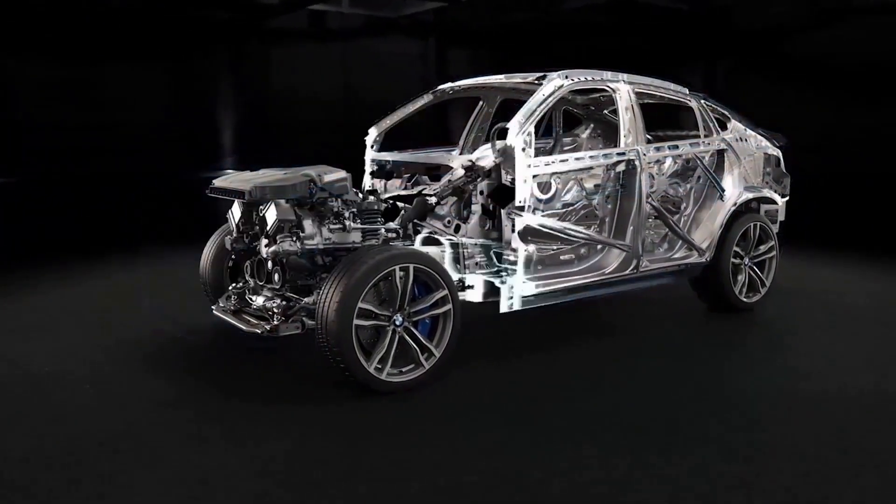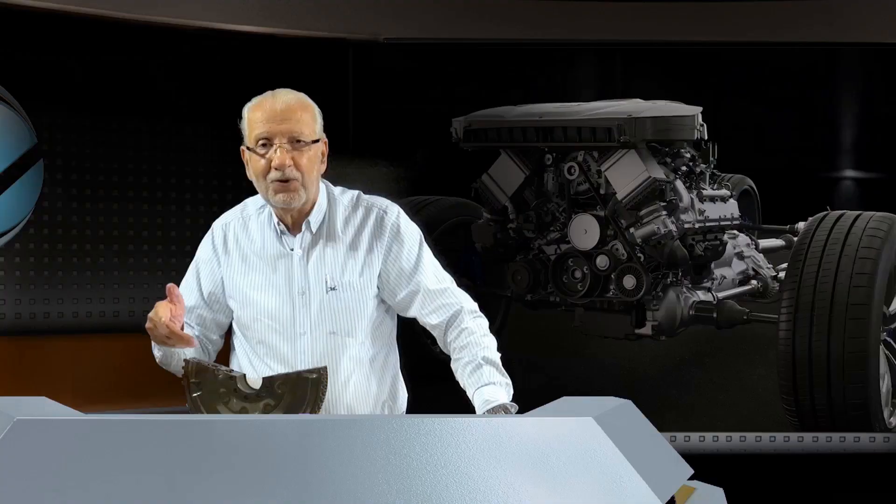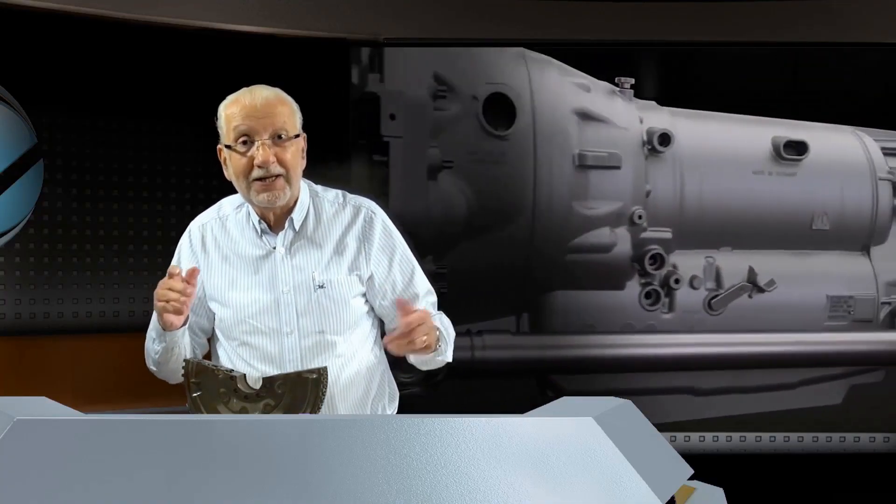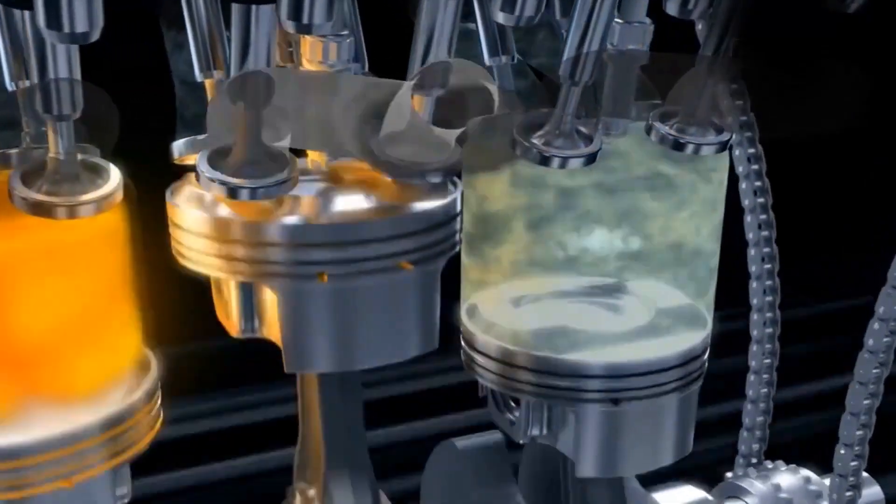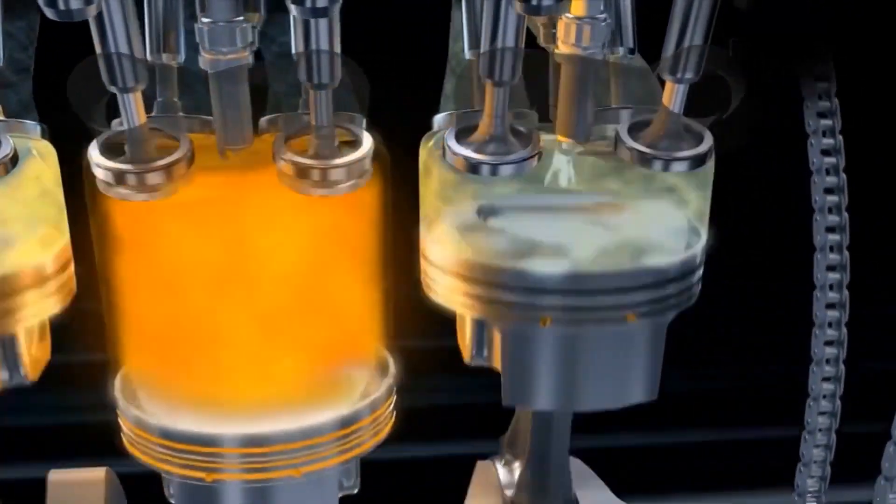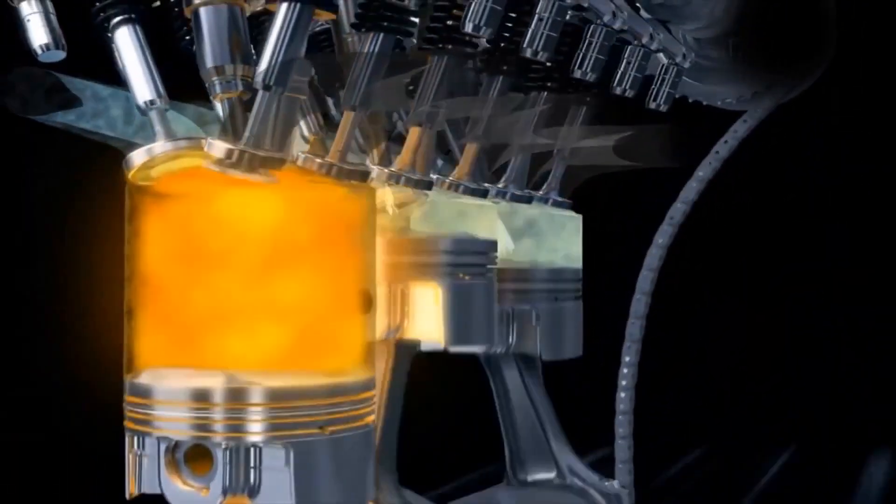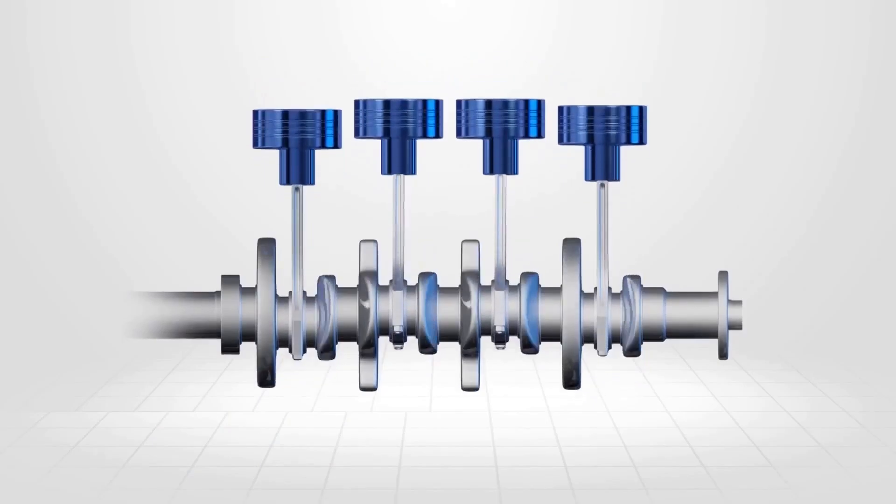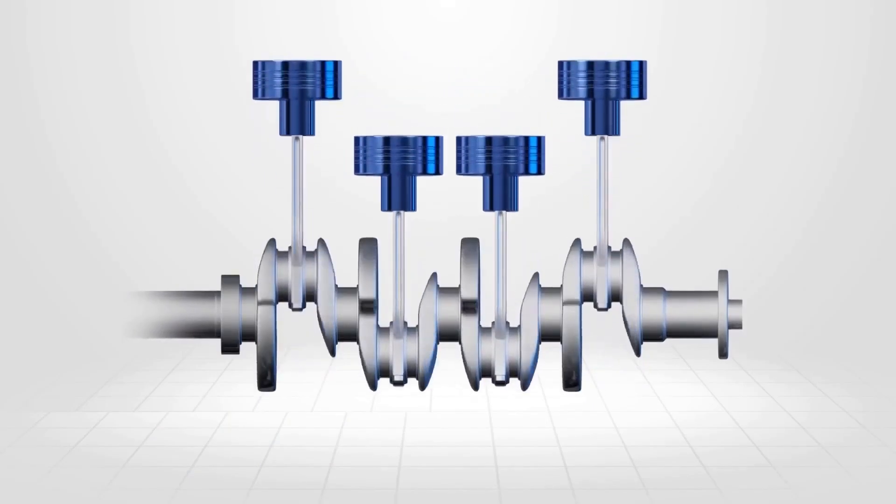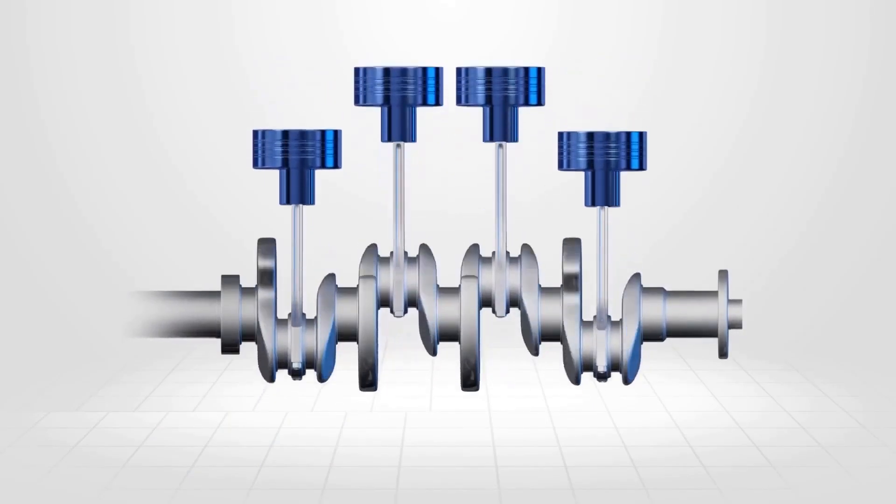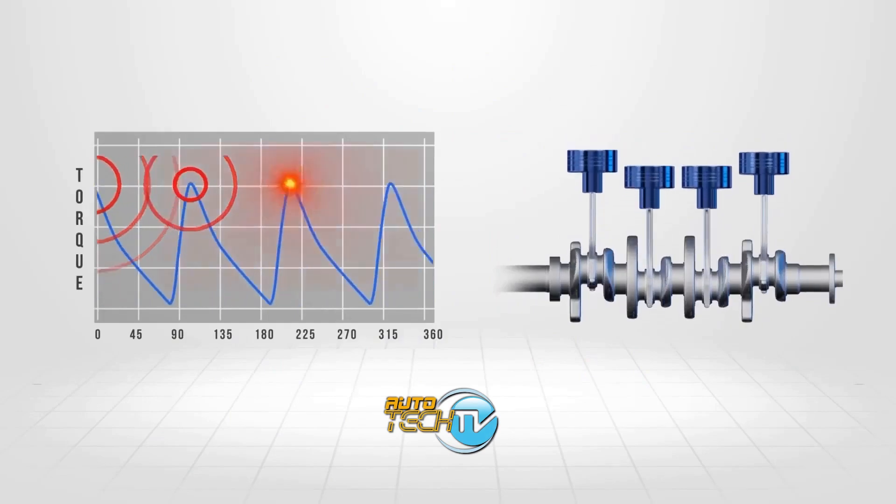What's the biggest difference when it comes to power delivery between an electric motor—this is going to hurt some folks to hear me talk about electric motors, but it is what it is—and the way power generated by the pistons moving up and down reaches the motor shaft?